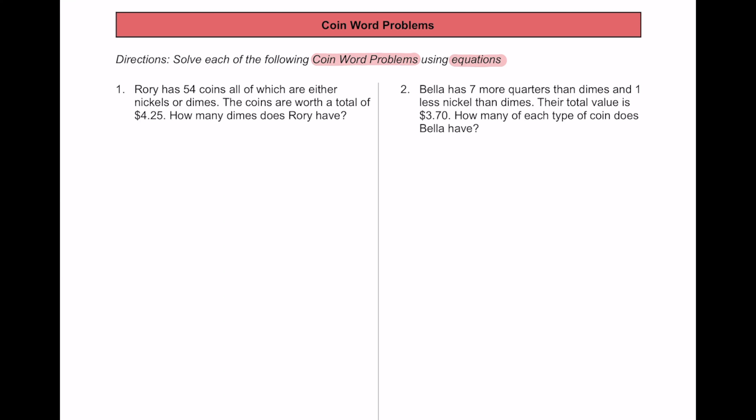For number one, Rory has 54 coins, all of which are either nickels or dimes. The coins are worth a total of $4.25. The question is, how many dimes does Rory have?